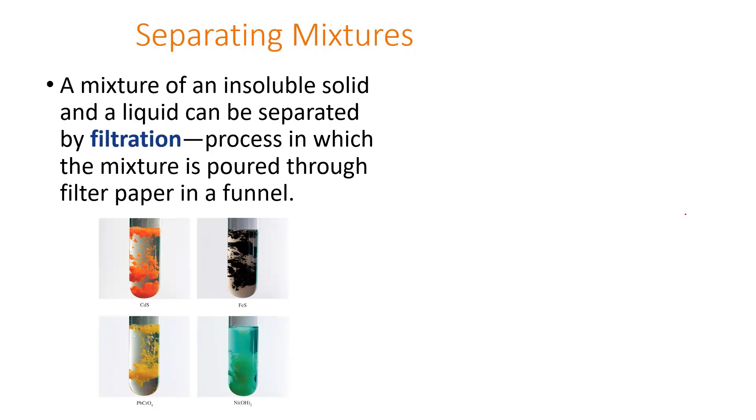A lot of times you can separate these by different means. One of the means is you can let the solid settle to the bottom, and if it settles to the bottom you can then pour off the top liquid. If you let the solid settle to the bottom, that's your precipitate, sometimes referred to as a pellet. Then the liquid on the top you can just pour off, and if you do that that's referred to as decanting.